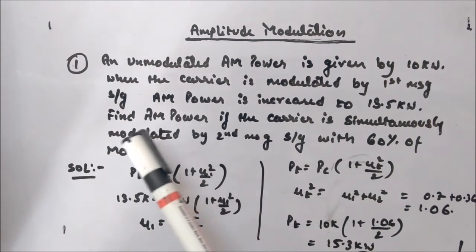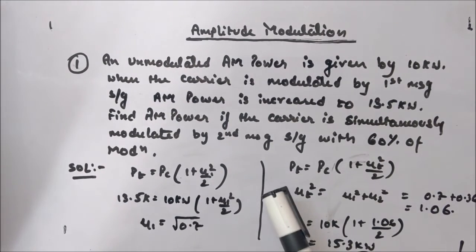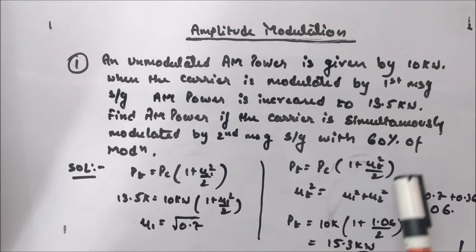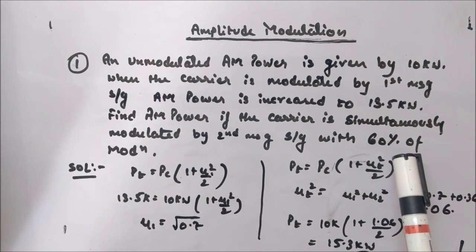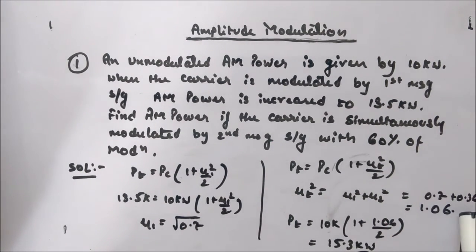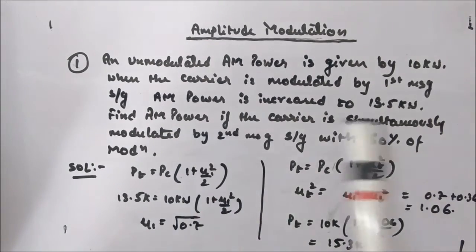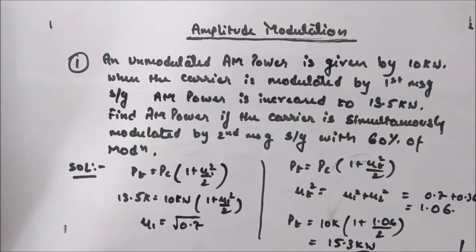Now we need to find the AM power when the carrier is simultaneously modulated by a 2nd message signal with 60% modulation. Using the simultaneous modulation formula PT = PC·(1 + muT²/2), where muT² = mu1² + mu2², we have mu1² = 0.7 and mu2 = 0.6, so mu2² = 0.36. Therefore muT² = 0.7 + 0.36 = 1.06. With PC = 10 kW, the total AM power comes out to 15.3 kW.